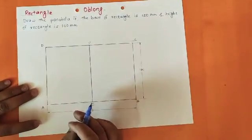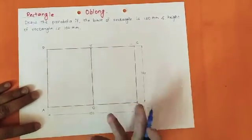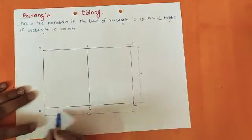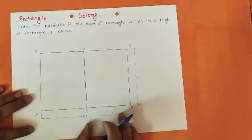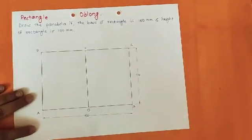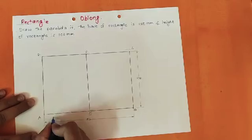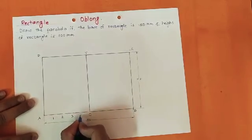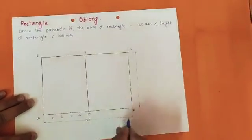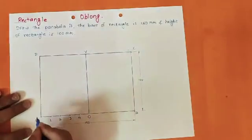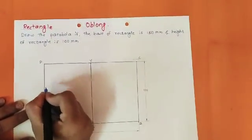Divide line AO and line AD into an equal number of parts. Here we divide both lines into five equal parts. For AO, 75 mm divided by 5 gives 15 mm each, so points from A to O are labeled 1, 2, 3, 4, and O is the fifth point. Similarly, divide AD into 5 parts of 20 mm each.